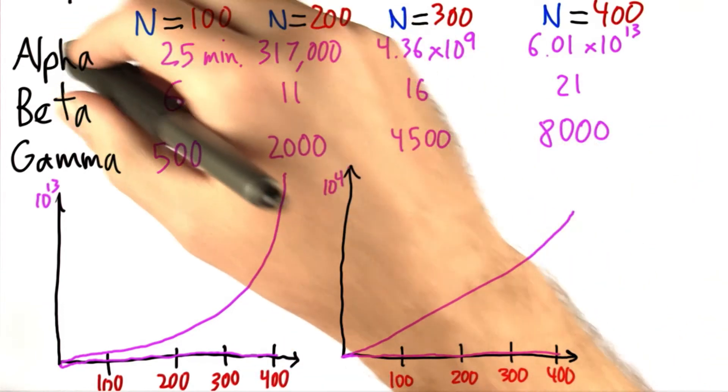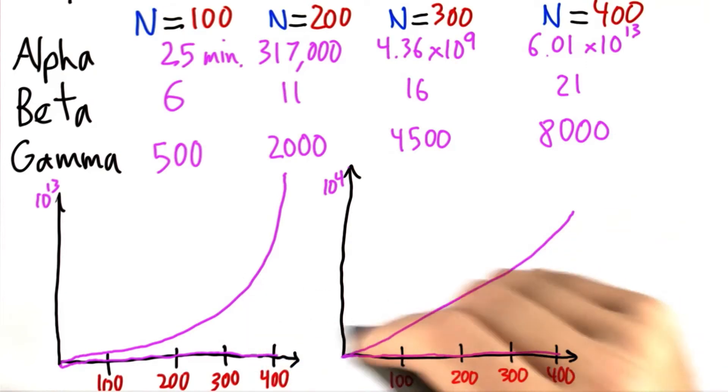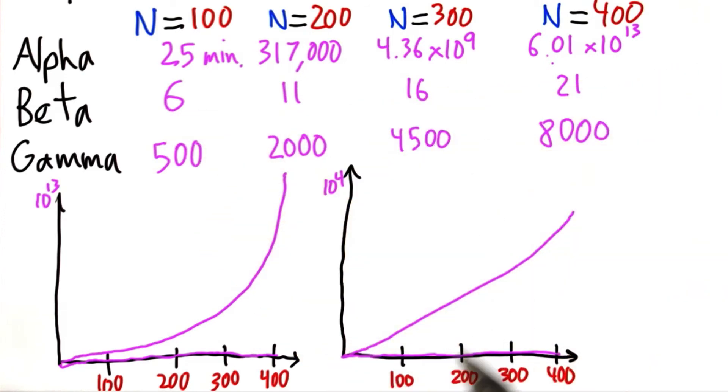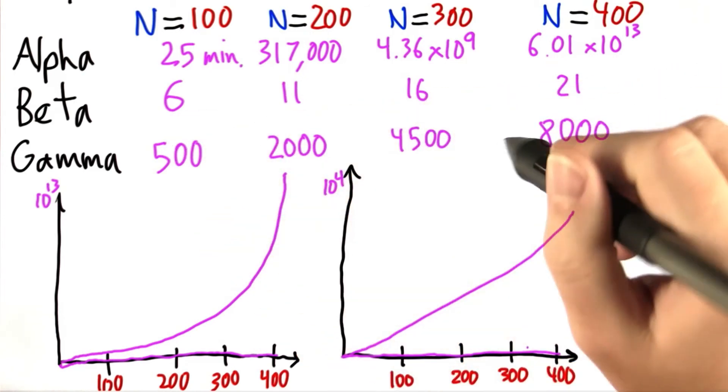And so you can see that they're really in different classes because they're both just growing so much slower than alpha is. But beta similarly is growing just so much slower than gamma is. So they're definitely in different classes.